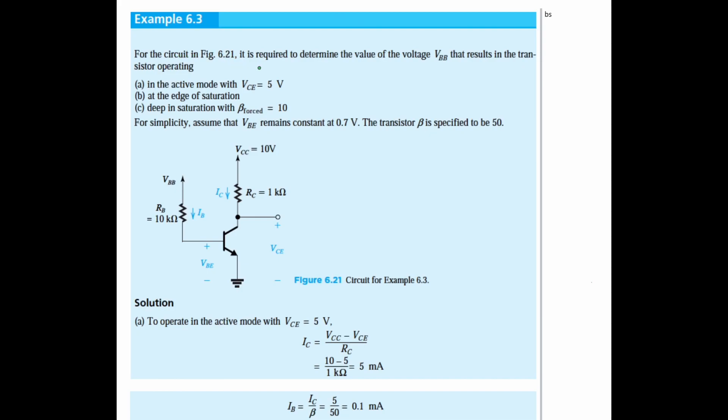For the circuit in figure 6.21, it's required to determine the value of the voltage VBB that results in the transistor operating. We want to find VBB depending on whether we're in part A, which is active mode, B at the edge of saturation, and C deep in saturation.